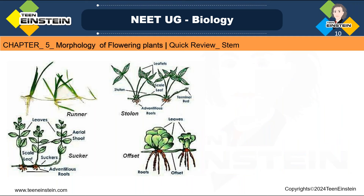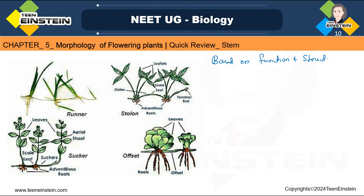On the basis of function and structural modification, the stem can be categorized into many types: underground or subterranean stem, aerial or epiterranean stem, and sub-aerial or prostrate stem. Based on function and structural modification, stem is classified into these different types. First one is underground stem modification, otherwise called as subterranean stem.